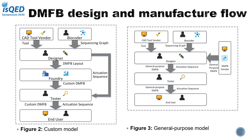Generally, there are two kinds of design and manufacture flows. Please look at figures two and three. One is the custom DMFB flow, and the other is the general purpose flow. The main difference is that custom DMFBs can run only a single bioassay or several specific bioassays. Due to the general structure and mass production, the cost of general purpose DMFB will be cheaper than the custom one. Just like ASIC and FPGA, the general purpose DMFB is predicted to be the future trend.